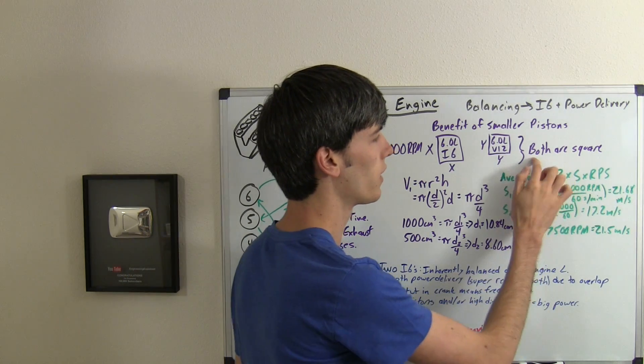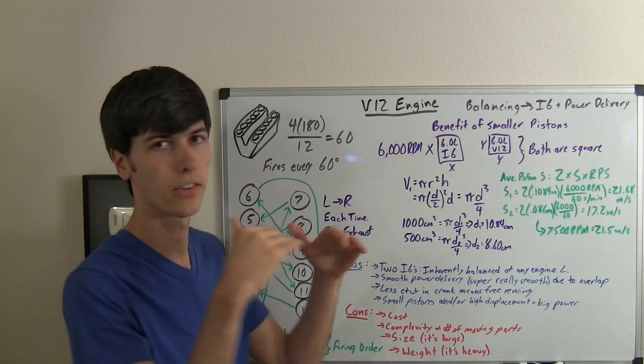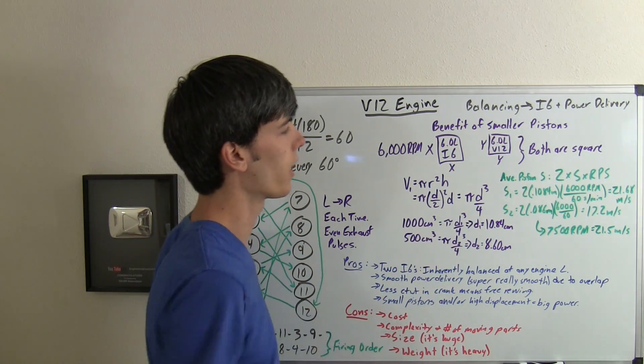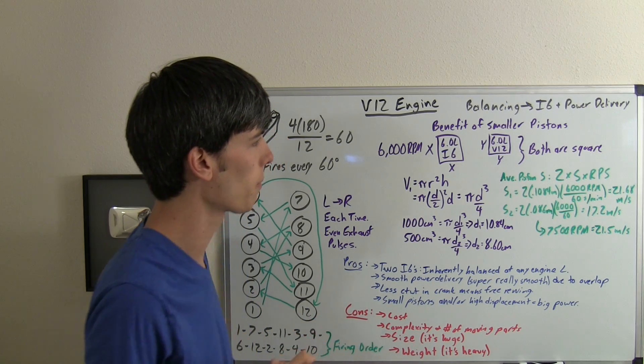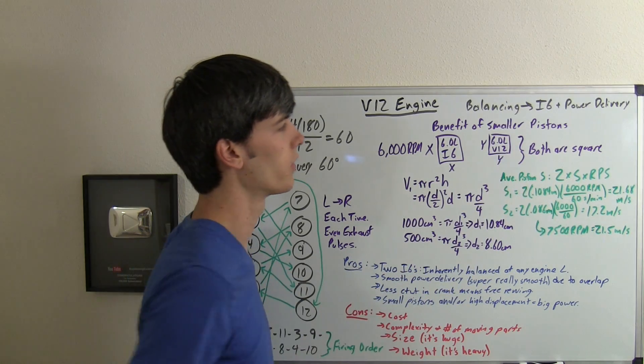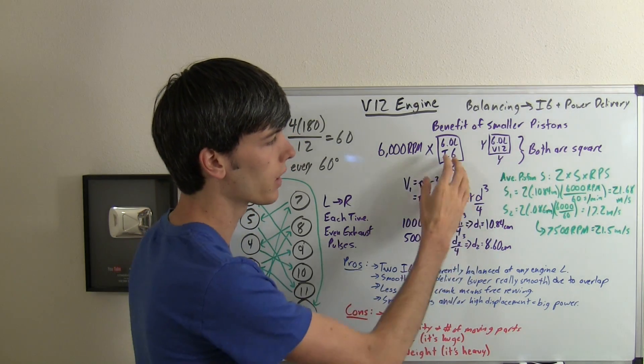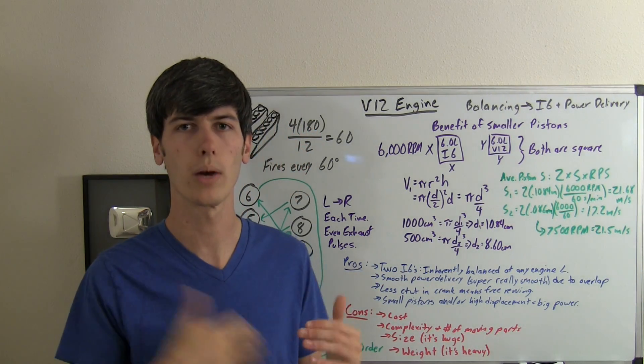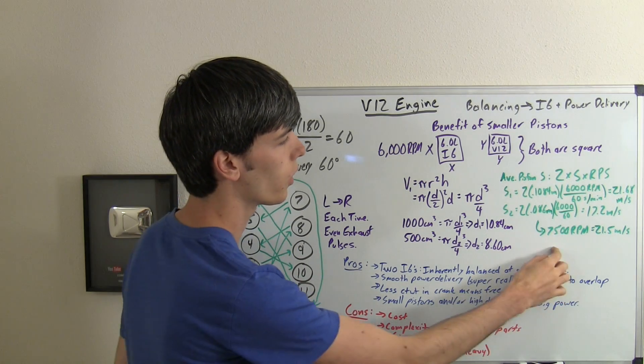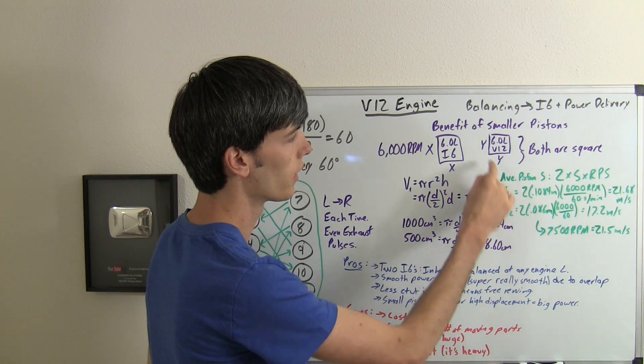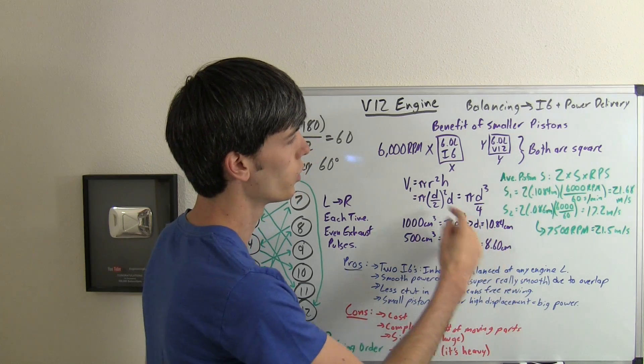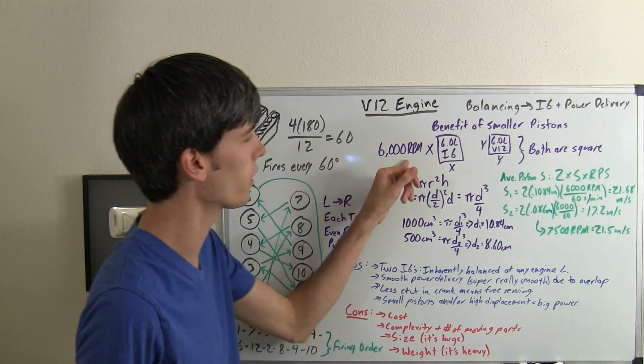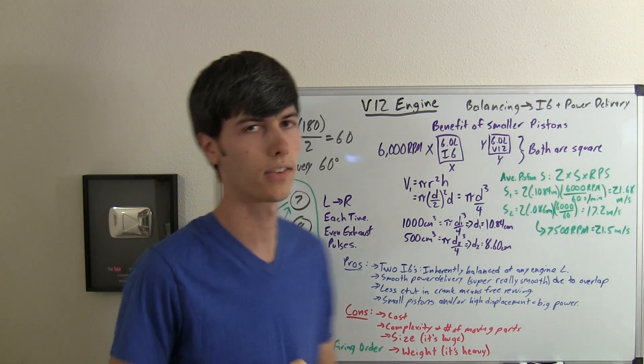So as you can see, the piston in the V12 engine both have the same cylinder dimensions relative, as far as they're both square, both the bore and stroke are the same. However, obviously the pistons in the V12 are smaller. And because of that, the pistons will travel slower. And because they travel slower, that means you can rev them to a higher RPM. So if you were to increase the second engine cylinder to 7,500 RPM, its average piston speed would be 21.5, which is still beneath this one, even when this one's traveling at 6,000 RPM.